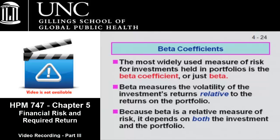Beta basically is a measure of risk that measures the volatility of a firm's returns relative to the returns on the portfolio — the market portfolio, if it's a market measure — or the organization. Let's go through each one.